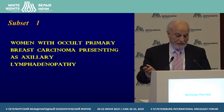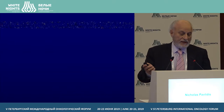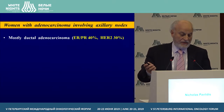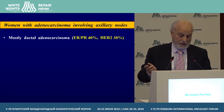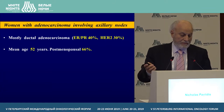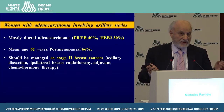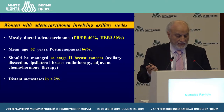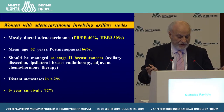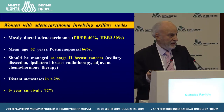Let's start with the first subset: women with occult primary breast carcinoma presenting with only axillary lymphadenopathy. These are mostly ductal adenocarcinomas, 40% ER/PR positive and 30% HER2. Mean age is 52 years, and they are postmenopausal in 66%. You should treat these patients like stage 2 breast cancer. Distant metastasis at staging is very rare, and the five-year survival is similar to breast cancer.